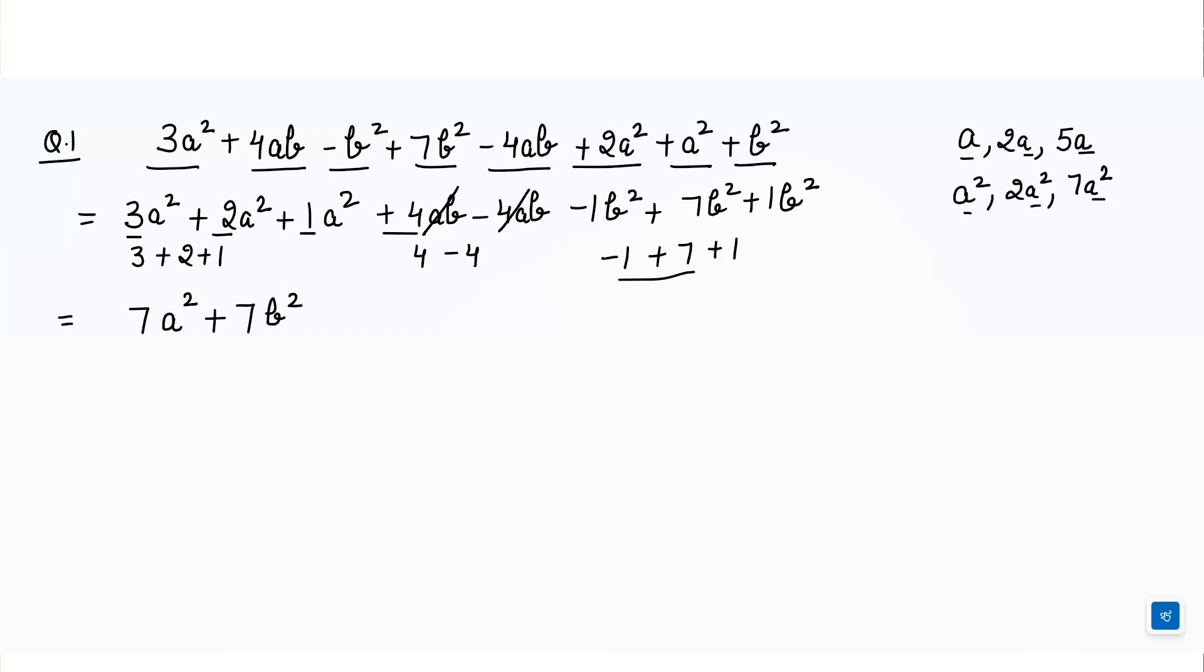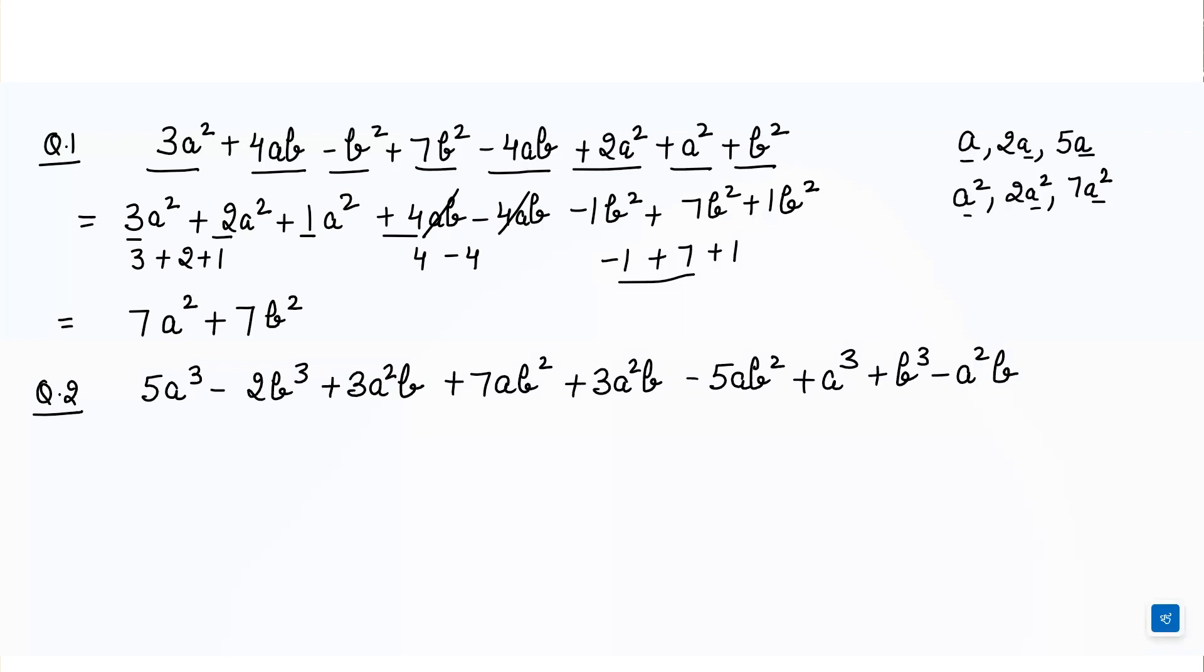Similarly, let's take another example. The first thing is we have to write down the like terms together. 5a cube and plus 1a cube minus 2b cube plus 1b cube plus 3a square b plus 3a square b plus another 3a square b minus 1a square b plus 7ab square.